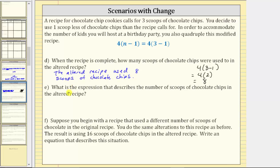For part E, what is the expression that describes the number of scoops of chocolate chips in the altered recipe? We're looking for an expression that describes the number of scoops, which is the left side of the equation: four times the quantity n minus one.